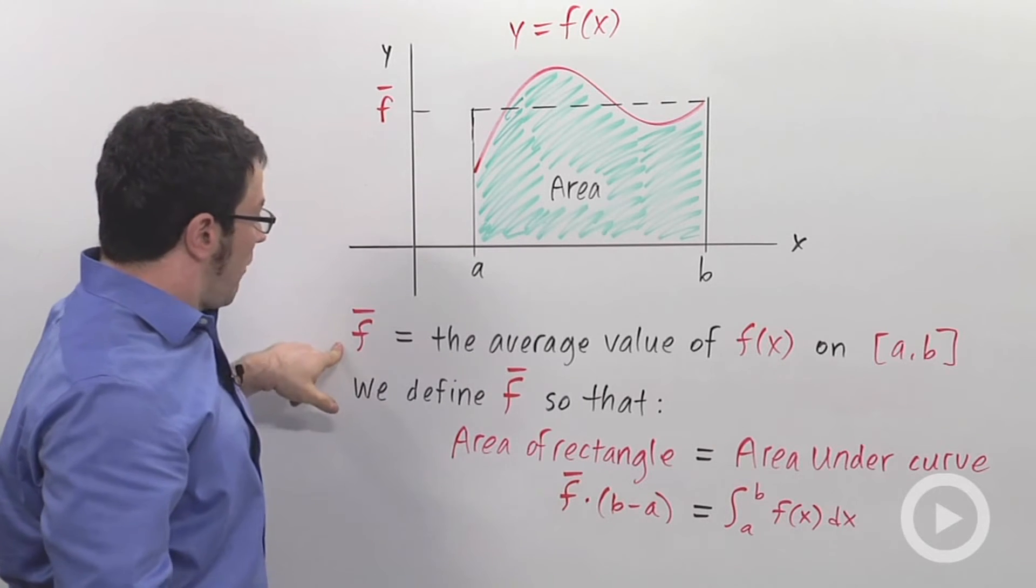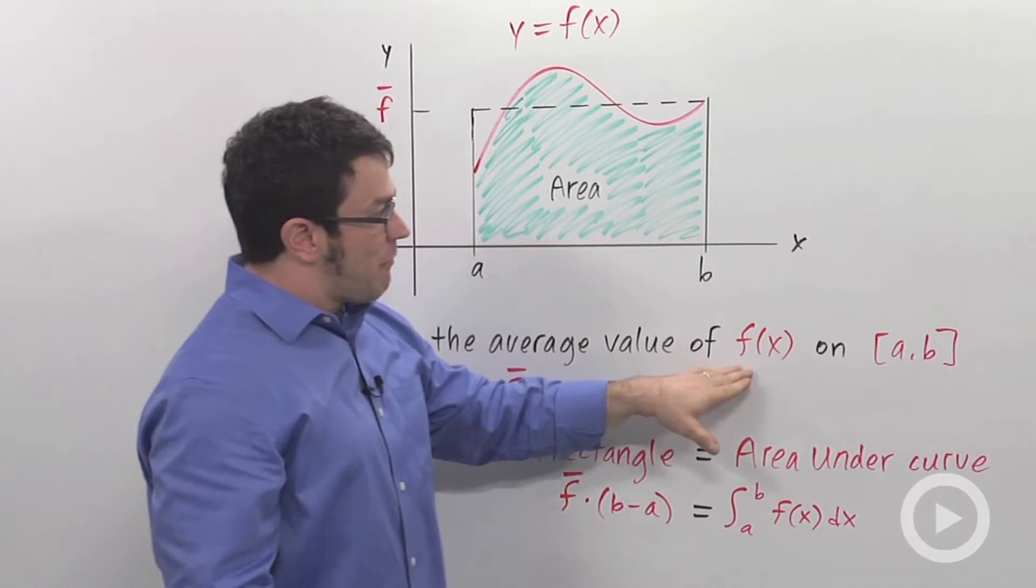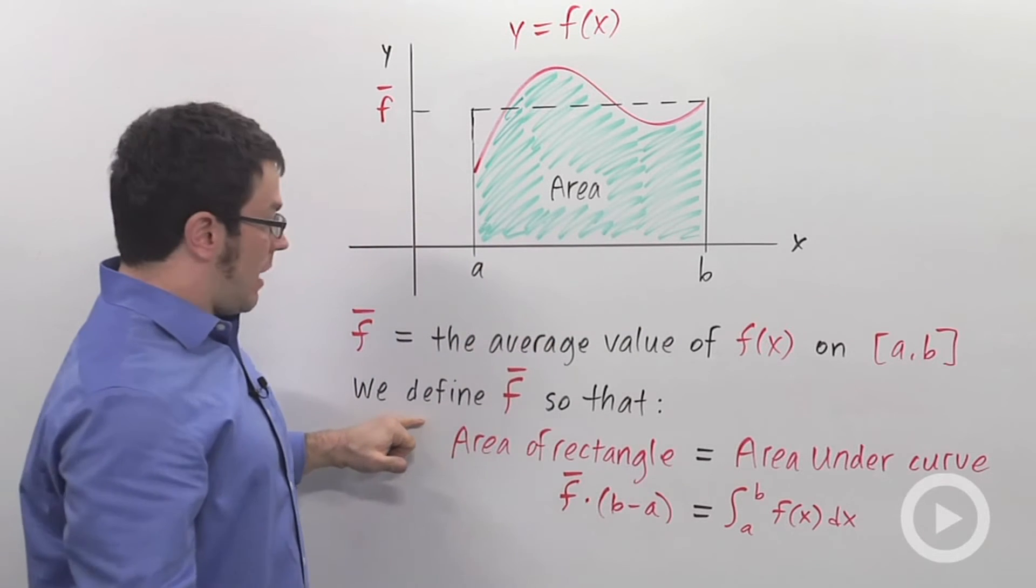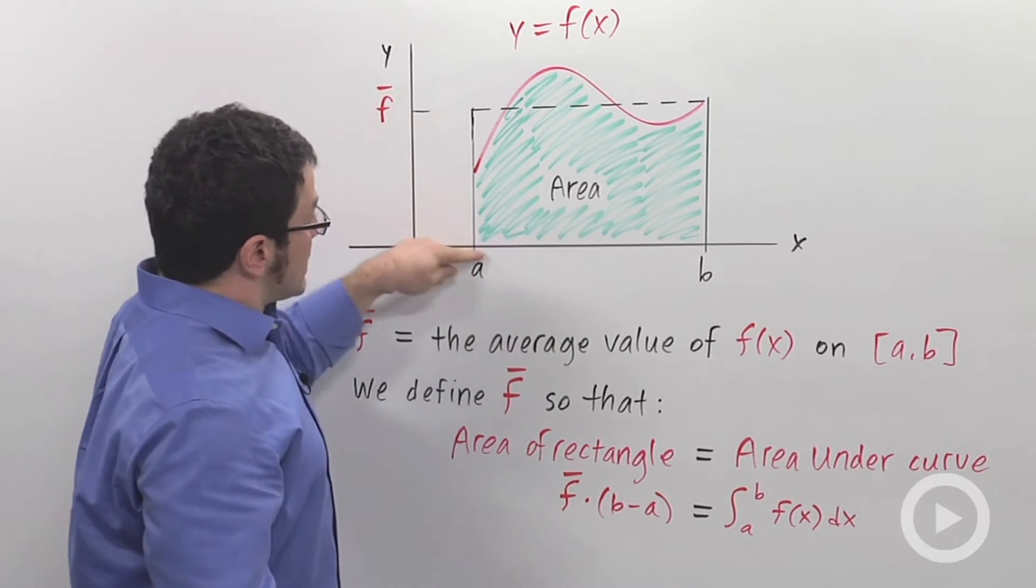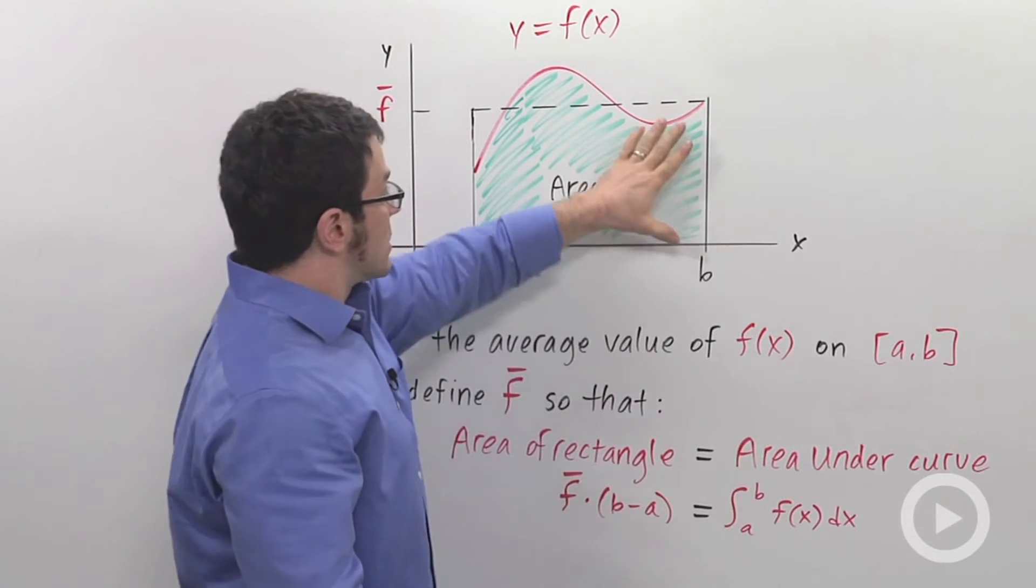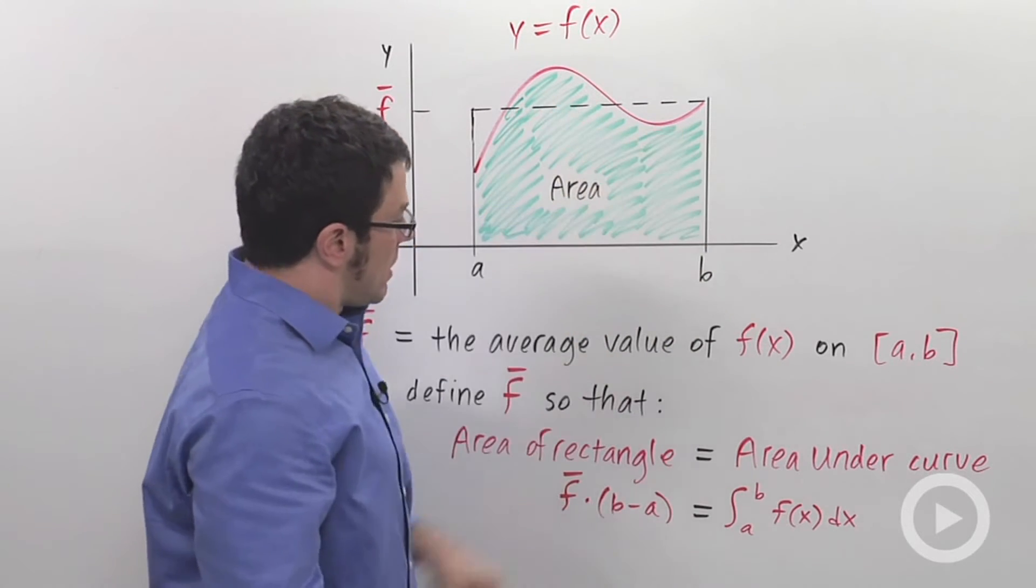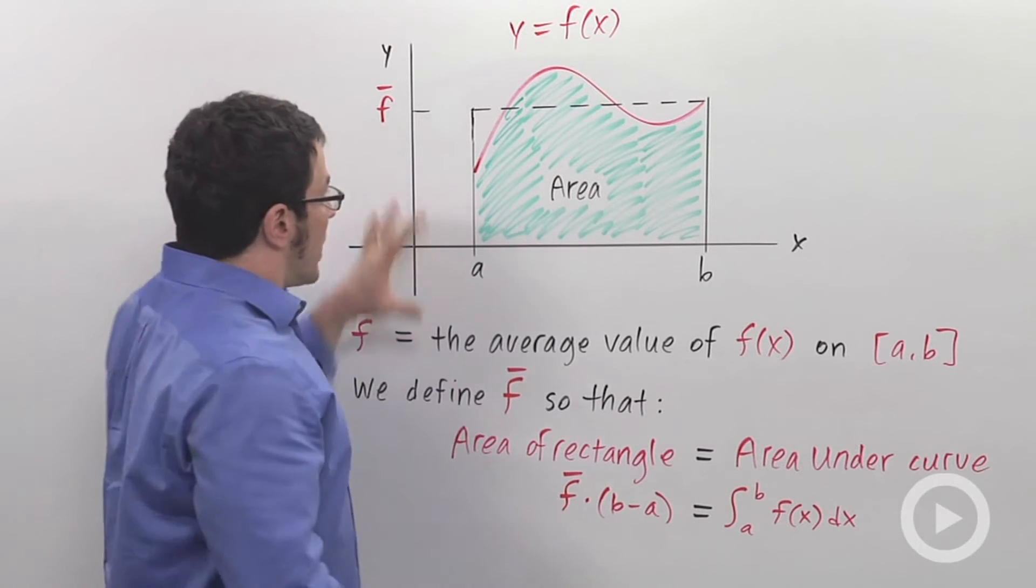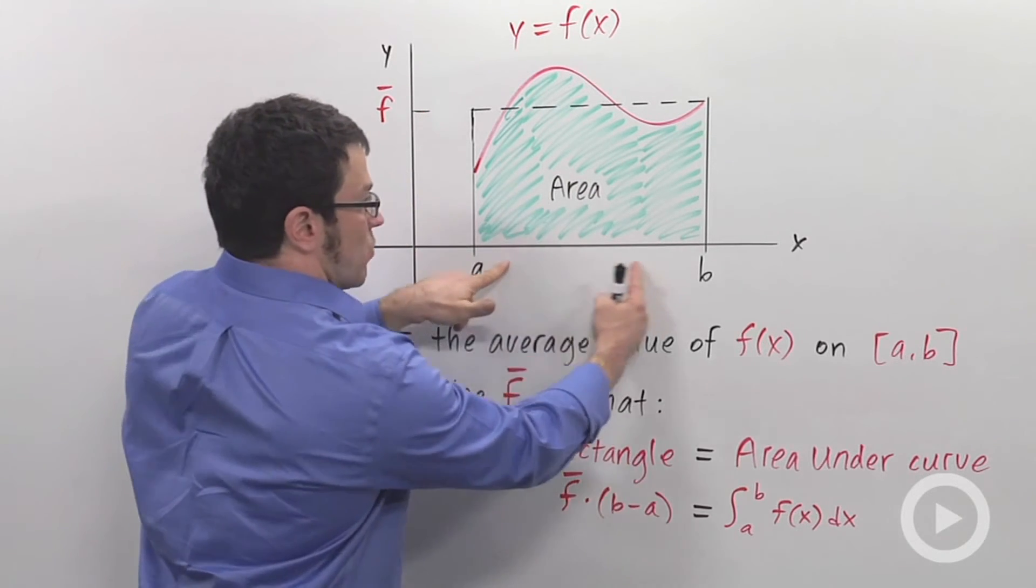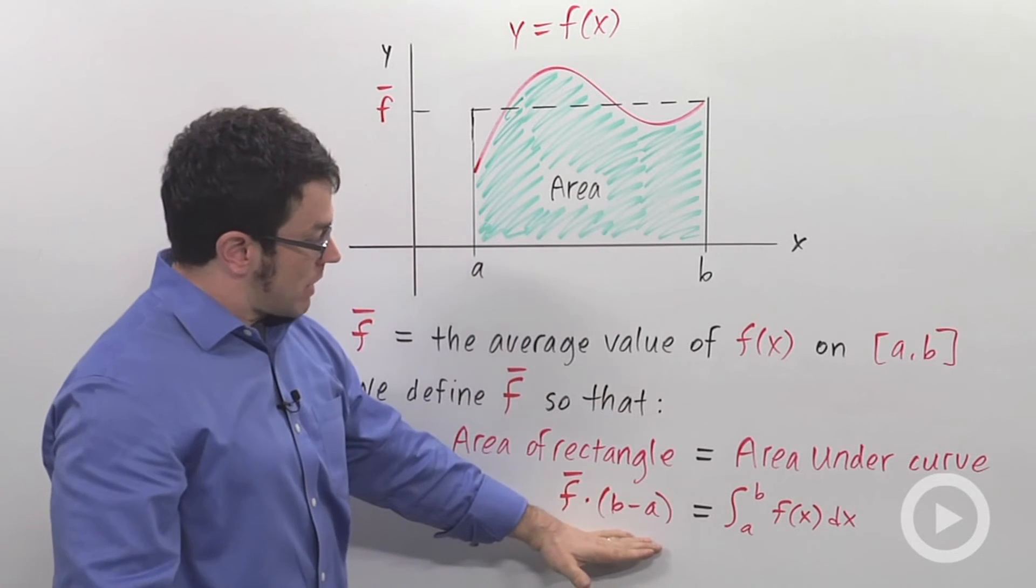The height of that level is going to be our average value, f bar. So we call f bar the average value of f of x on the interval a to b. And we define f so that the area of this rectangle is exactly equal to the area under the curve, this green area here. The area of the rectangle is whatever height this is, f bar, times b minus a, this width. That's the rectangle.